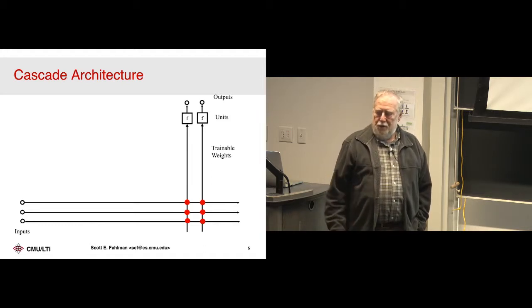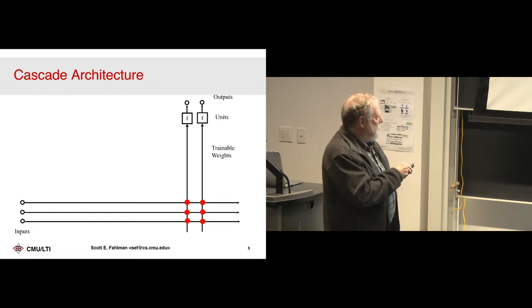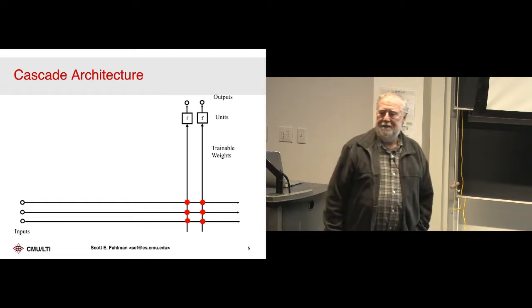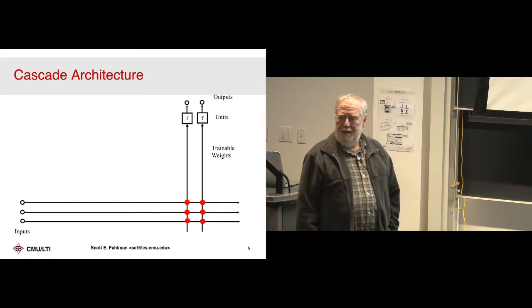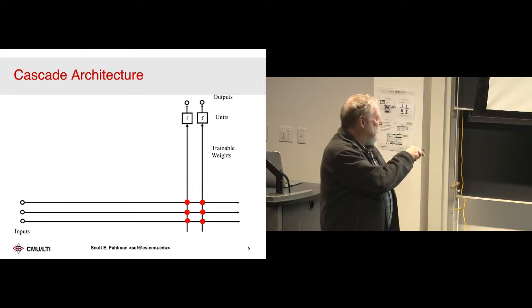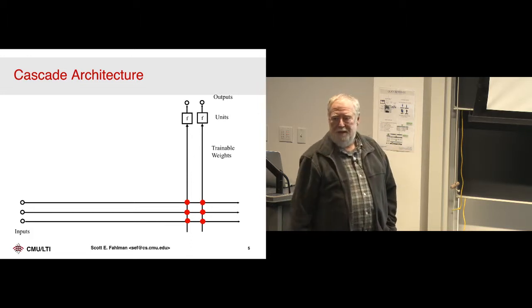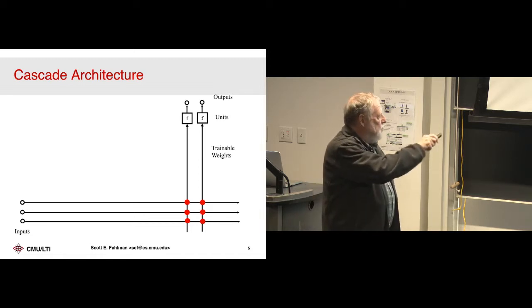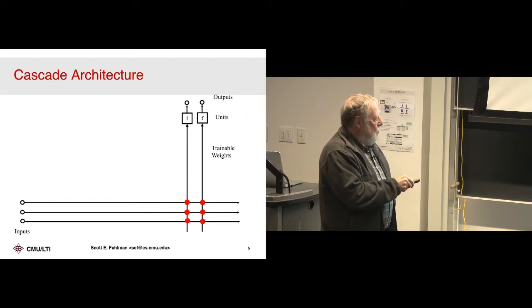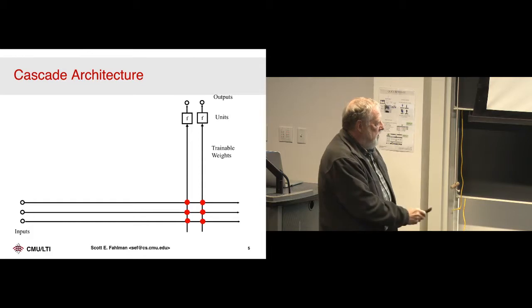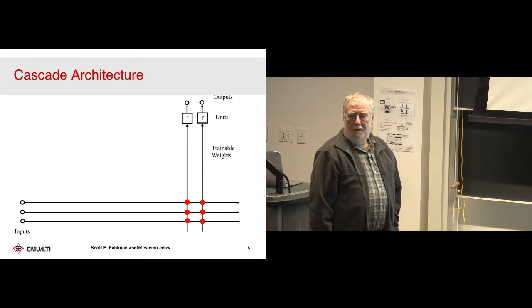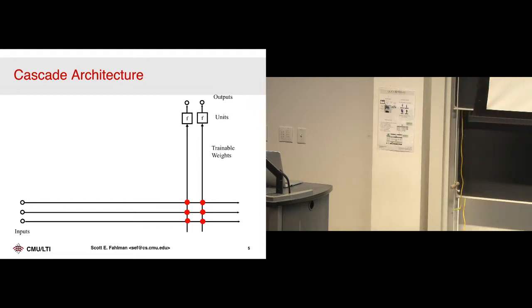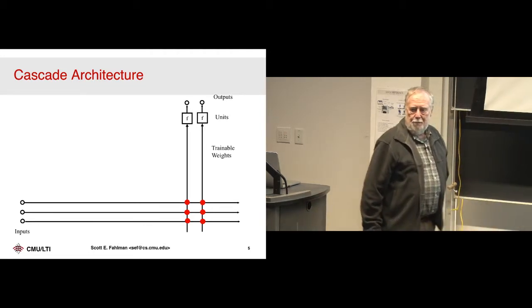You've all seen something like this — a three-input, two-output perceptron with no hidden units. That's the initial network we start with. Depending on the problem, you might have hundreds of inputs and two outputs or one output. The problem dictates what you start with. These vertical lines are adjustable weights, and this line is summing all the inputs. So you've got inputs here and this unit is adding inputs through the weights, summing them up, and producing an output.